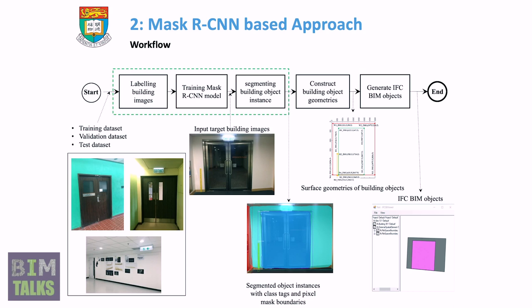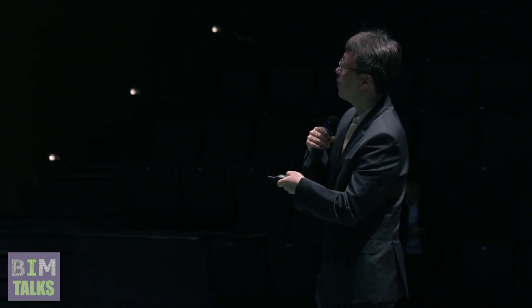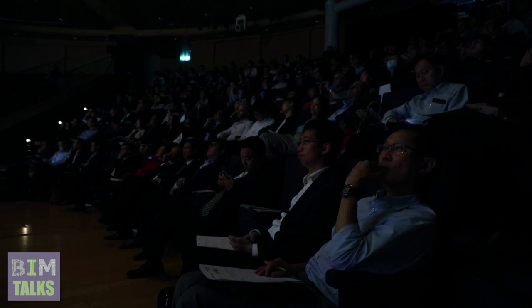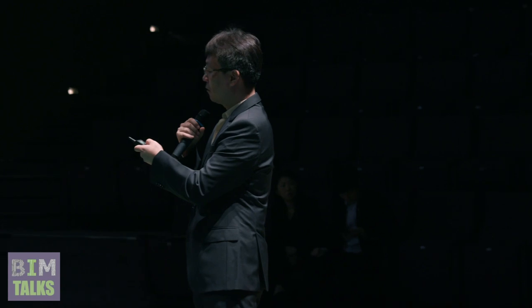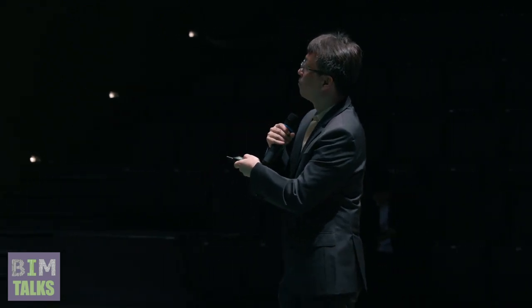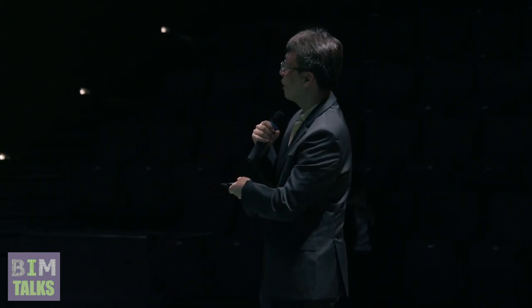We tested this with images taken from campus buildings under different lighting conditions with some noise. We trained the networks with these different images, then put sample images for testing, and the results showed quite promising outcomes. For example, this part is a window, this part is a wall, and there is a ruler to measure dimensions. We take these images and convert them to geometric models and eventually make an IFC BIM model.